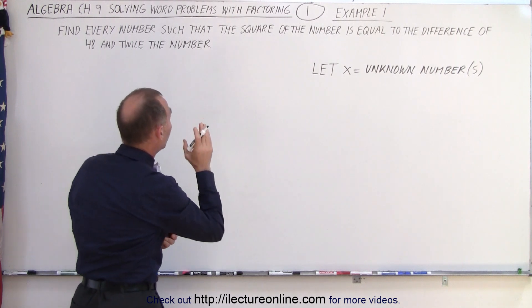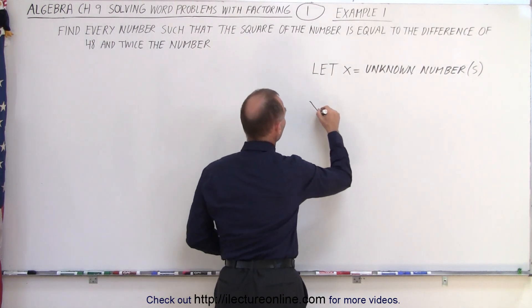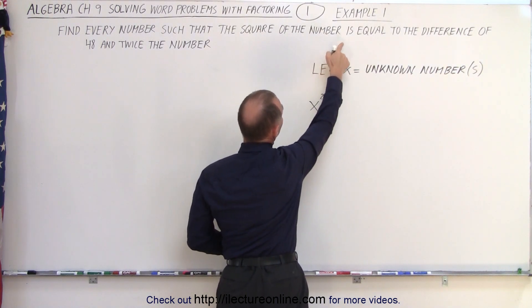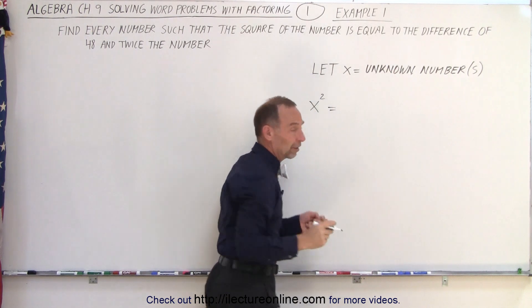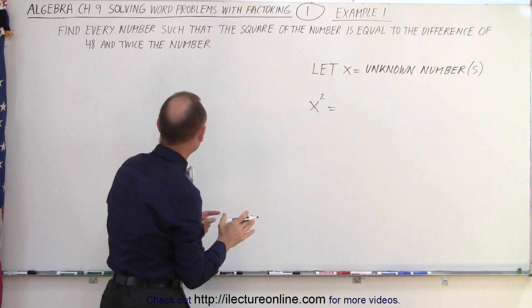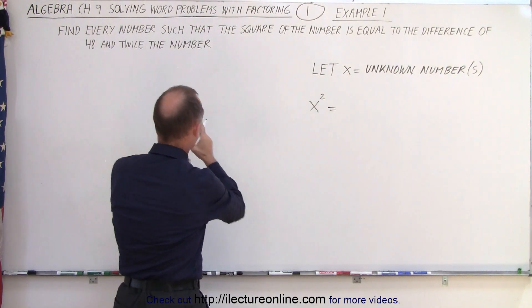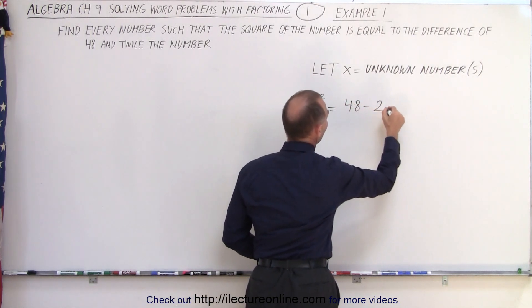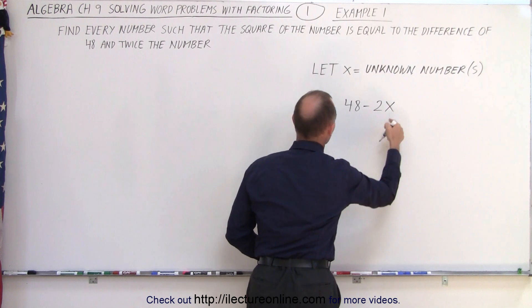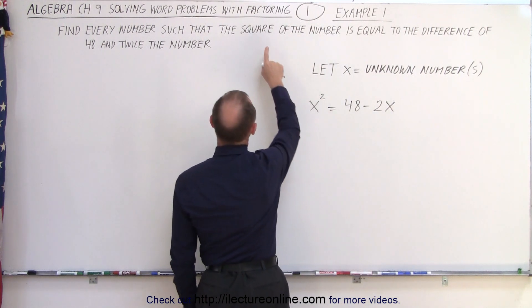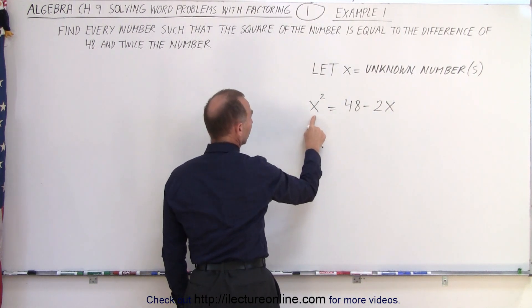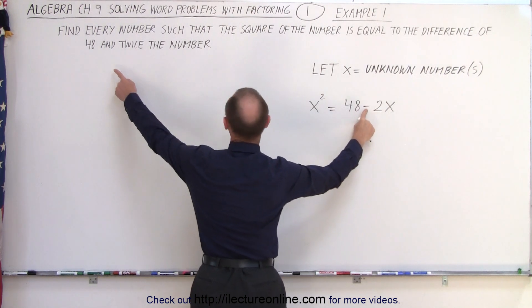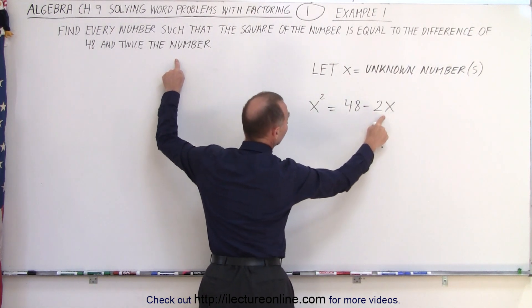It says that the square of the number, so x squared, is equal to the difference. The difference means we're going to subtract two things: 48 and twice the number. So that means 48 minus 2 times the number, which would be 2 times x. So x squared is equal to the difference between 48 and twice the number.